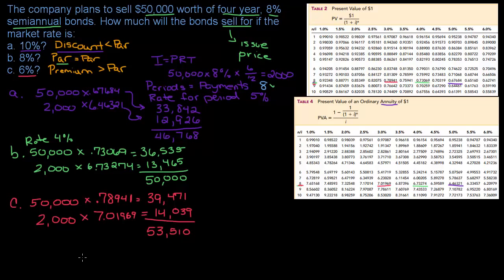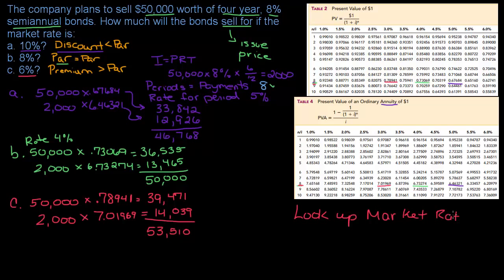So here are your three results: 10% market rate gives a discount at $46,768; 8% gives par at $50,000; and 6% gives a premium at $53,510. Don't forget: when you're looking things up in the table, always look up the market rate. Look up the market rate — very important.